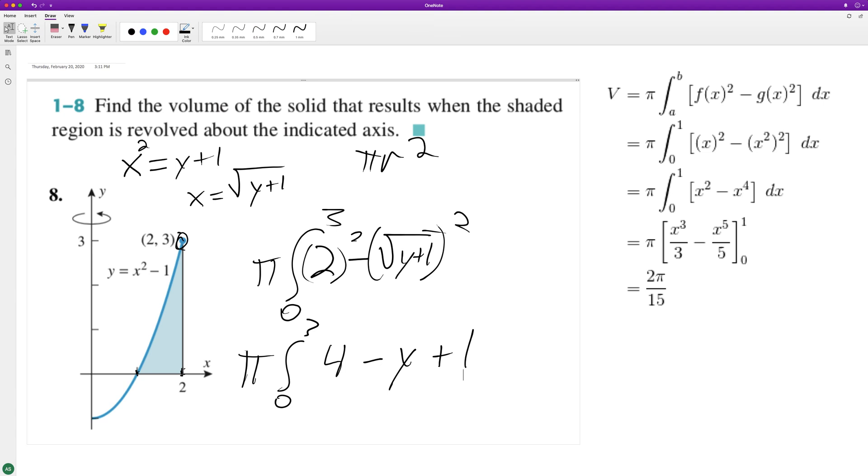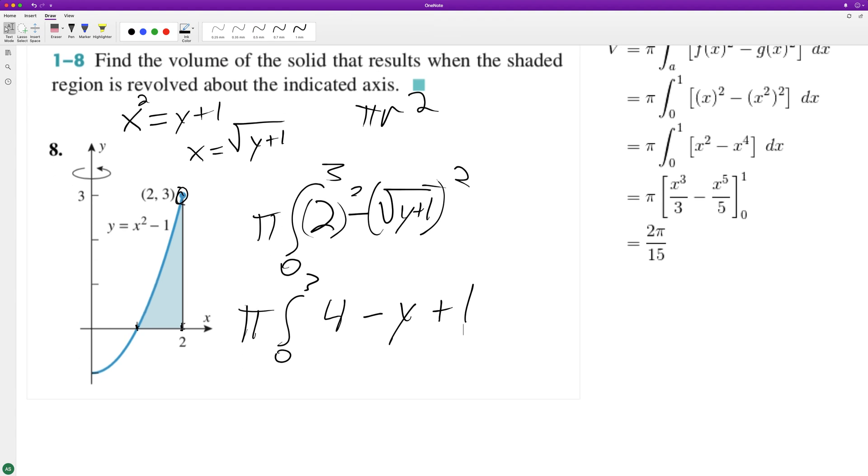You know what, this should be a minus one, because when I get rid of the square root it distributes the minus, so we end up with three minus y.